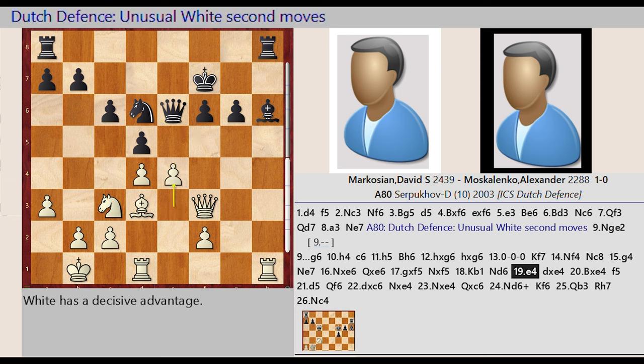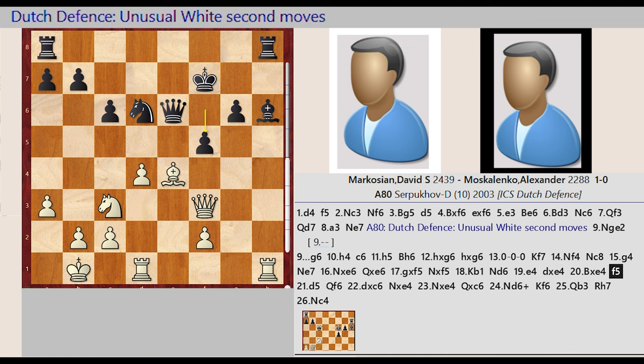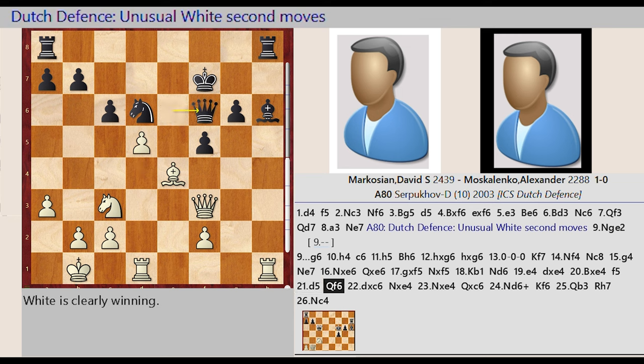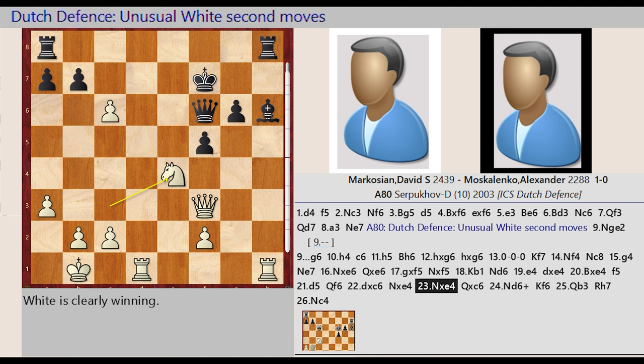e3 e4, d5 captures e4, bishop d3 captures e4, f6 f5, d4 d5, queen e6 f6, d5 takes on c6, knight d6 captures e4, knight c3 captures e4, queen f6 captures c6.